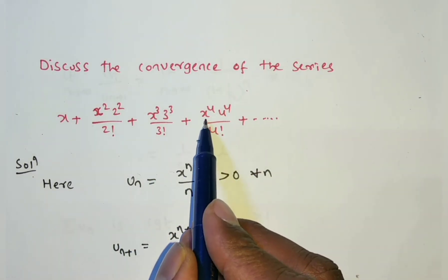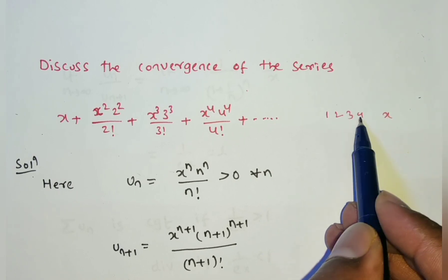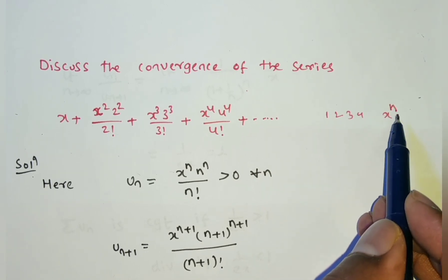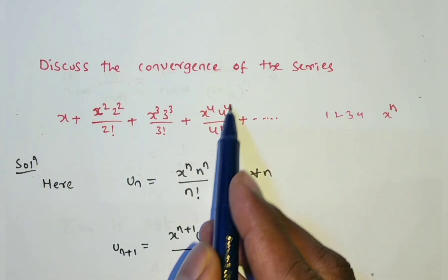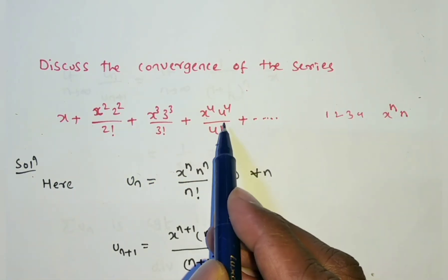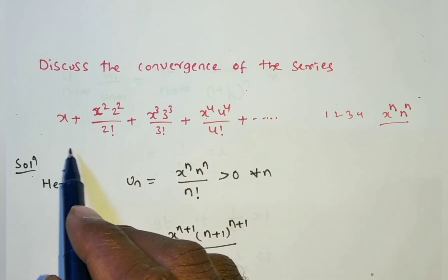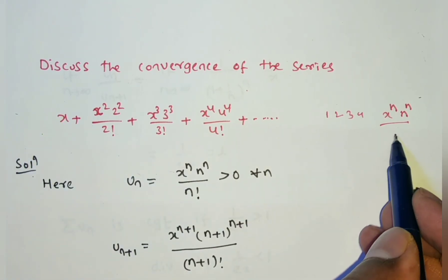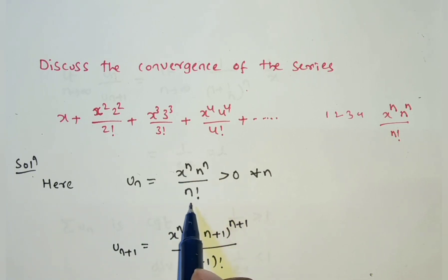So un = x to the power of n. Looking at the pattern: the power of x is 1, 2, 3, 4 — that is n. The base of the numerator factor is also 1, 2, 3, 4 raised to the same power n, giving n to the power n. The denominator follows 1!, 2!, 3!, 4! — that is n factorial. Therefore, un = xⁿ · nⁿ / n!.